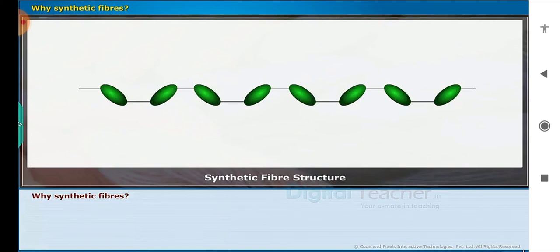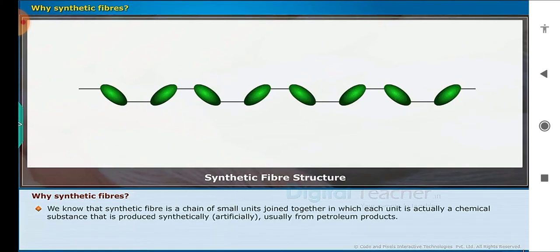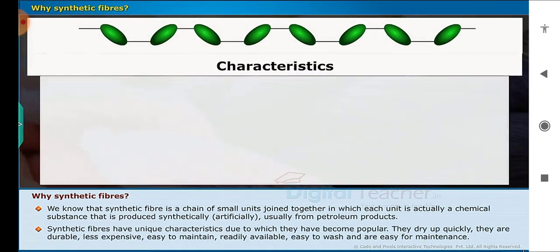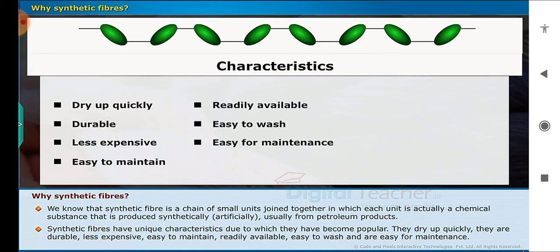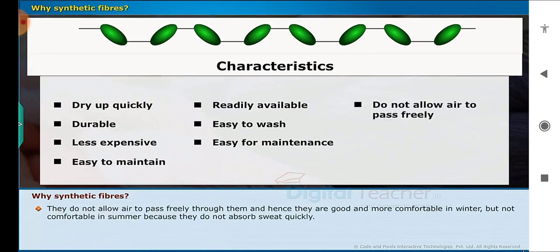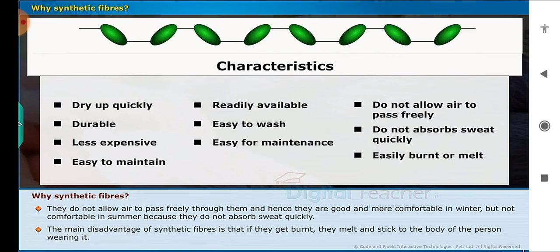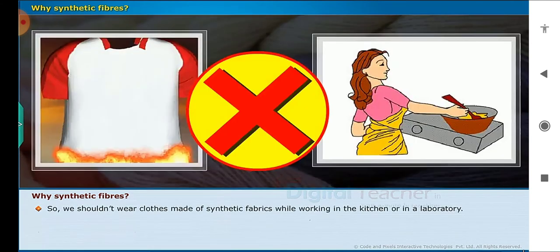Why synthetic fibers? We know that synthetic fiber is a chain of small units joined together in which each unit is a chemical substance produced synthetically or artificially, usually from petroleum products. Synthetic fibers have unique characteristics due to which they have become popular: they dry up quickly, they are durable, less expensive, easy to maintain, readily available and easy to wash. They do not allow air to pass freely through them, hence they are comfortable in winter but not comfortable in summer because they do not absorb sweat quickly. The main disadvantage of synthetic fibers is that if they get burnt, they melt and stick to the body of the person wearing them. So we should not wear clothes made of synthetic fibers while working in the kitchen or in a laboratory.